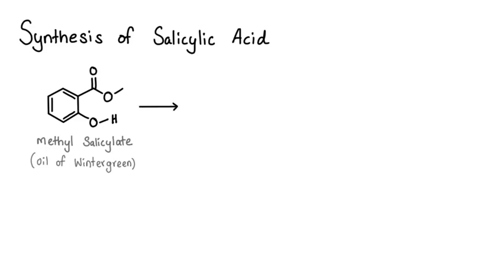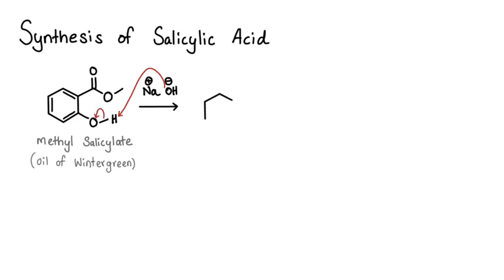When you treat this methyl salicylate with sodium hydroxide, the first thing that happens is the phenolic proton will be removed. Here is the acidic proton. The most acidic proton will be removed by sodium hydroxide and you get the oxide anion.